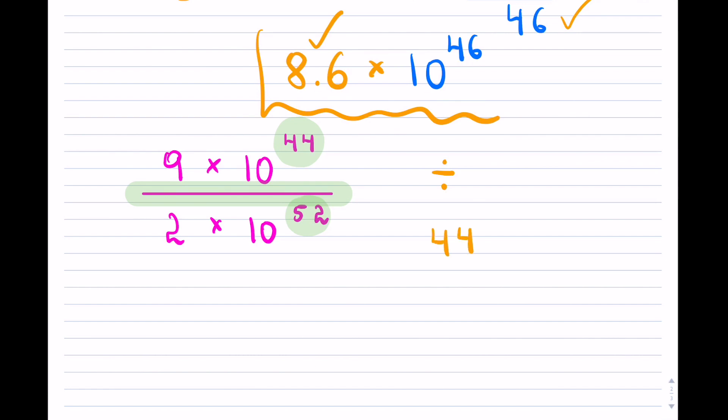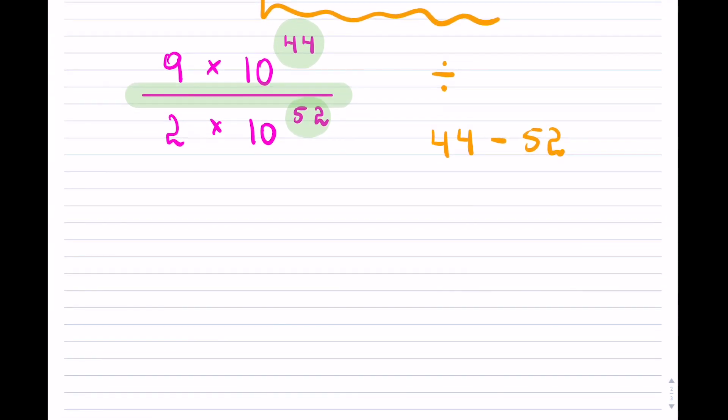So that means we have 44 on top minus 52. And well, we can do that, so we know the answer will actually be negative because we are subtracting bigger numbers, so this is really 52 minus 44. Okay, so let me borrow this, so that's 12, 12 minus 4 is 8, okay, and then 4 minus 4 is 0, so the answer is negative 8.